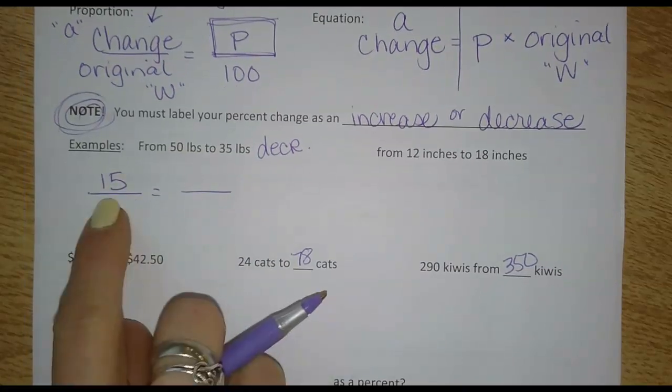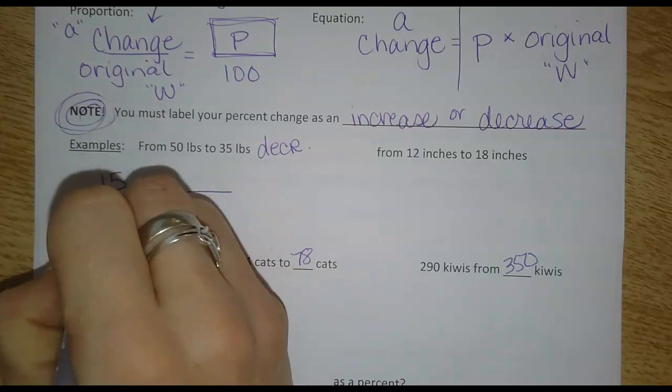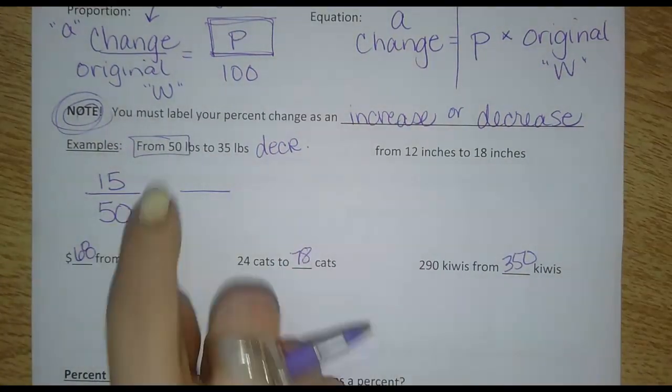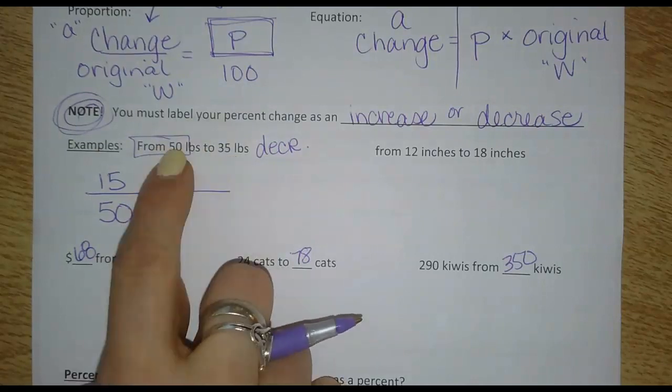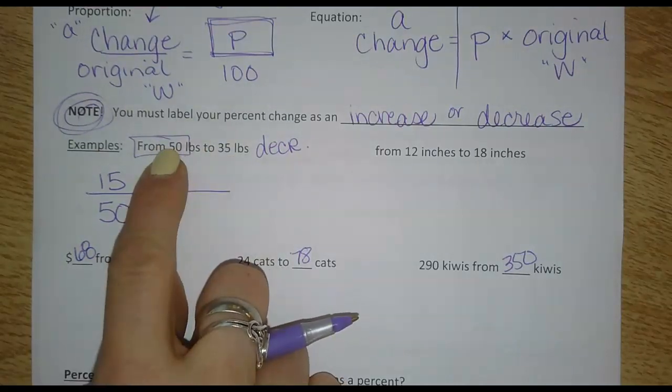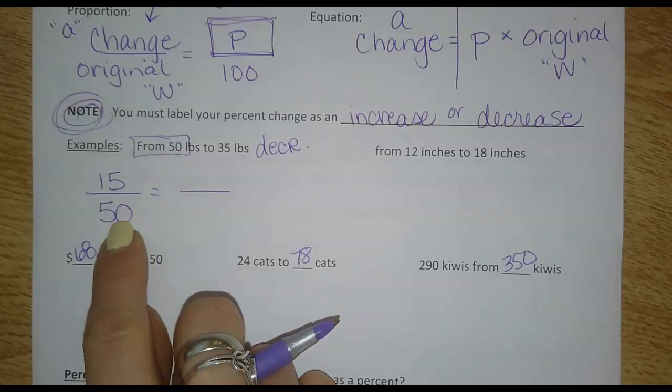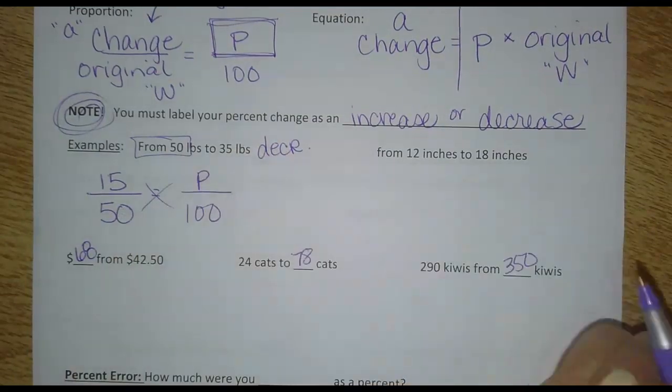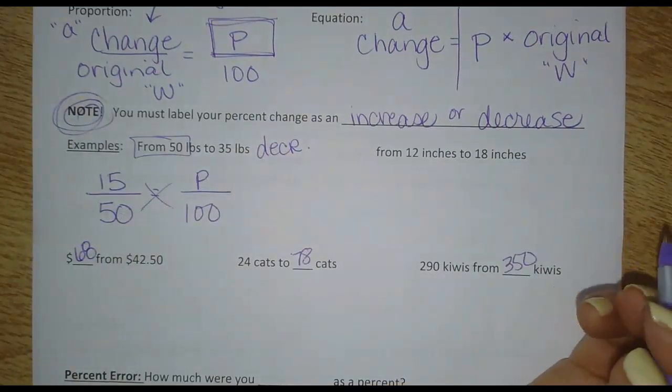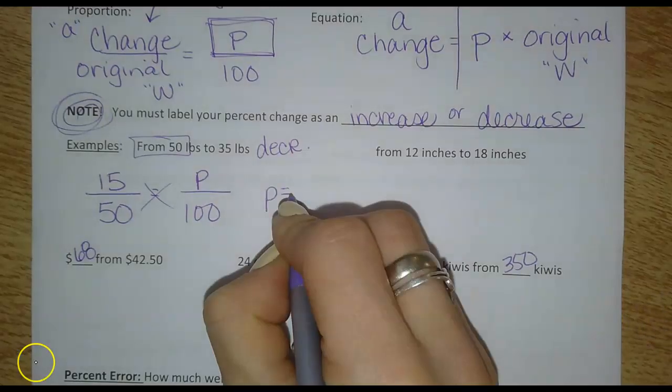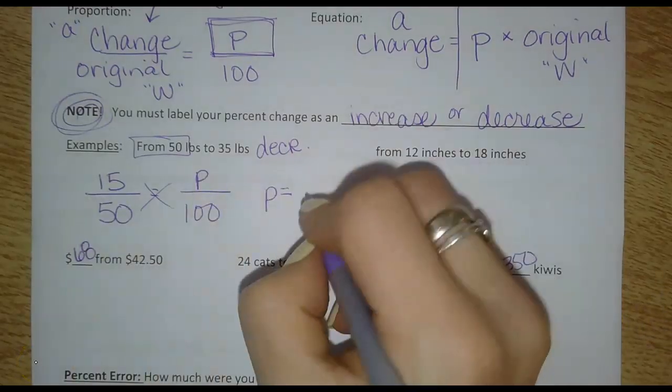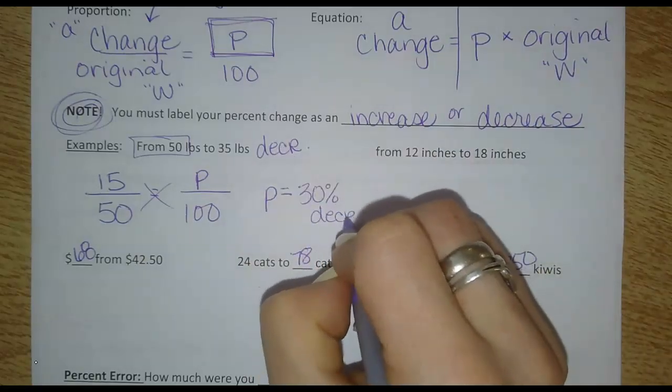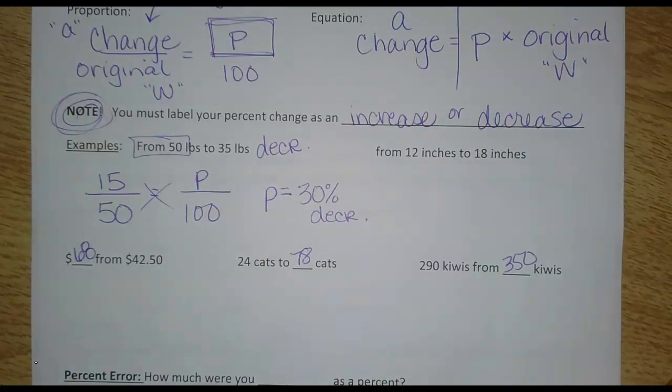And then I put it over the original. Well, the original is the 50. You have to pay attention to which one it started as. It went from 50 to 35, so this one happened first, this is the original. Goes in this spot. And then I'm going to solve for P over 100. So we would cross multiply that. Go ahead and do it quick. And when you do that, I get that P is equal to 30 percent. And because it went down, 30 percent decrease.